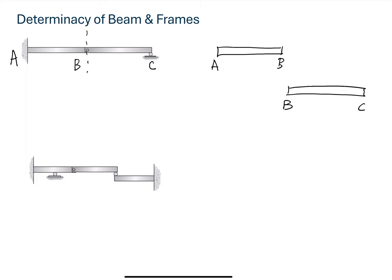We can put the reaction forces on these two beam segments. Support A is a fixed support, so for a fixed support we have three reaction forces: horizontal reaction force, vertical reaction force, and moment. Support B is a hinge support, which looks like a pin support. On a pin support, we have two reaction forces. This gives us the reaction forces on beam segment AB.